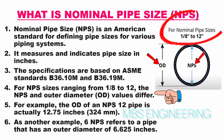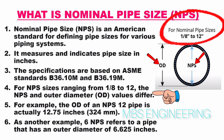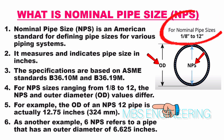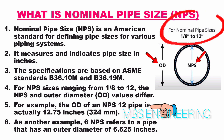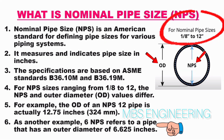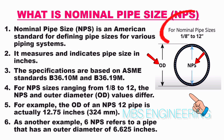For nominal pipe sizes ranging from 1/8 inch to 12 inches, the NPS and outer diameter (OD) values differ. For example, an NPS 12 pipe has an outer diameter of 12.75 inches or 324 millimeters. Similarly, NPS 6 refers to a pipe with an outer diameter of 6.625 inches — so NPS and outer diameter values differ.